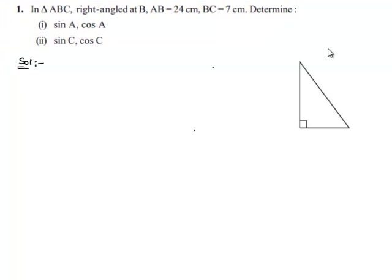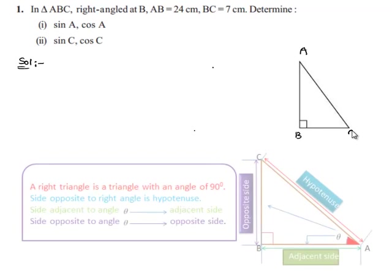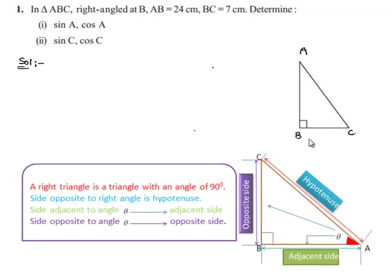Moving on to the solution, let us consider triangle ABC which is right angled at B. Here, AB is equal to 24 cm and BC is equal to 7 cm. Let us also find the hypotenuse AC.